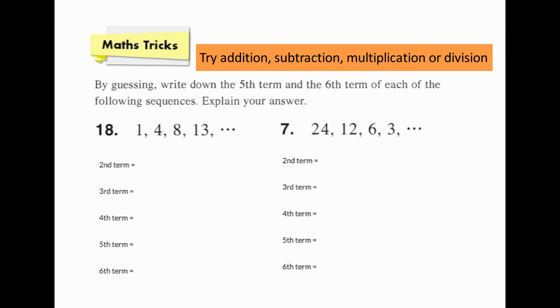Think about the second term. The first term, 1 plus 3, is equal to 4. The second term, 4 plus 4, is equal to the third term 8. The first row is plus 3, and the second row is plus 4.